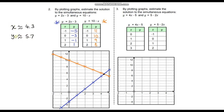So those are my two estimated answers; I'll check at the end. For question three, our two equations are y equals 4x minus 5 and y equals 5 minus 2x. Starting with y equals 4x minus 5: when x equals zero, 4 times zero minus five is negative five. With gradient four, for every one along the x-axis we go up by four, giving values negative one, three, and seven.